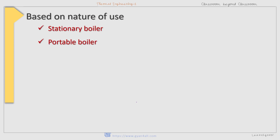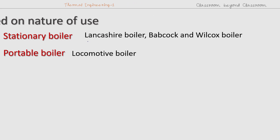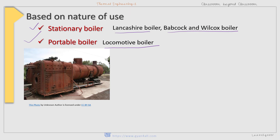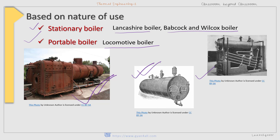Based on nature of use, boilers may be classified as stationary or portable (mobile) boilers. Stationary boilers cannot be transported easily from one place to another — examples include Lancashire and Babcock and Wilcox boilers. Portable or mobile boilers can be easily transported or moved, with the locomotive boiler being a key example.